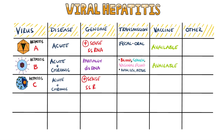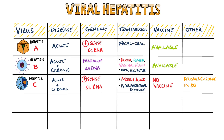Hepatitis C is a positive-sense, single-stranded RNA virus and is transmitted through blood and other fluids, but usually involves some form of parenteral exposure, especially intravenous drug use. No vaccine is currently available for hepatitis C, but there are promising results from research.